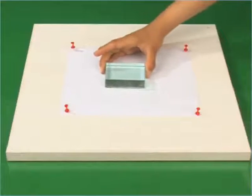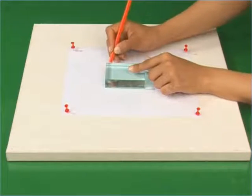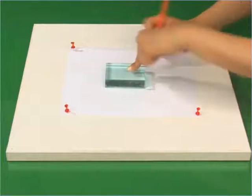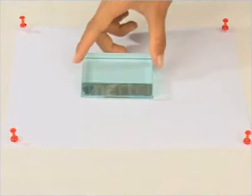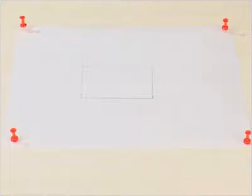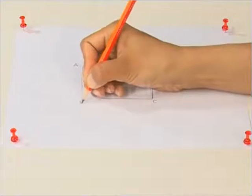Place a rectangular glass slab in the middle of a white sheet. Draw the outline of the slab with a pencil. Remove the glass slab. Name the outline as A, B, C, D.